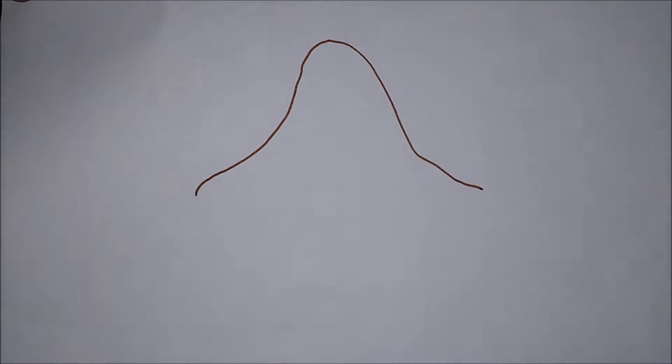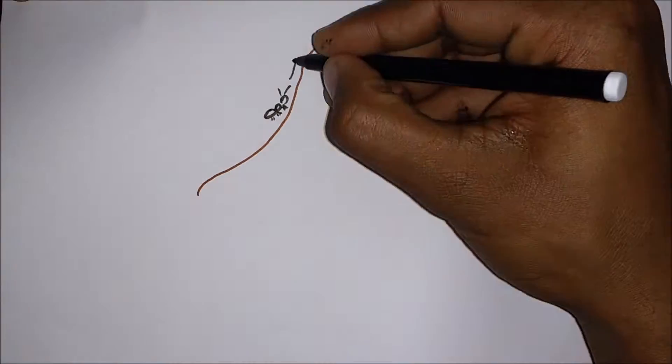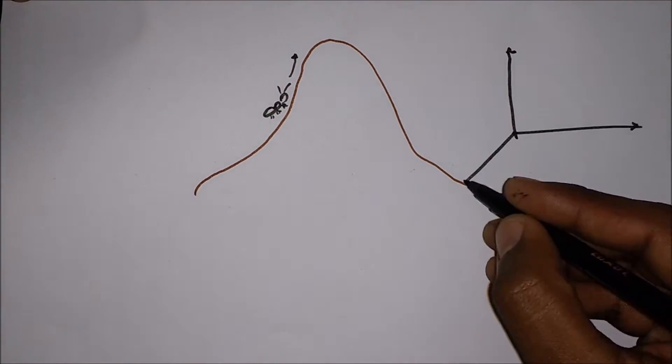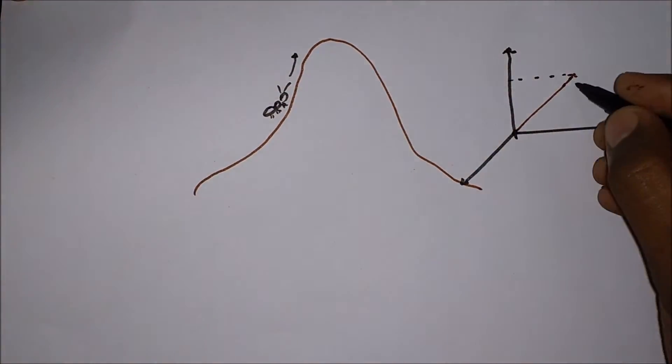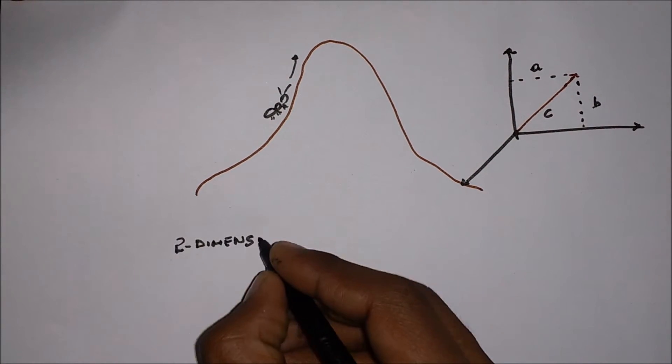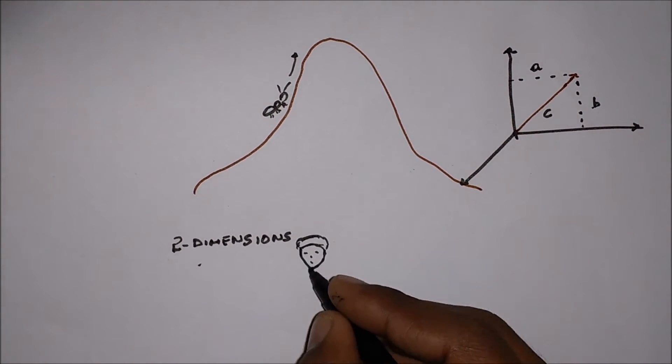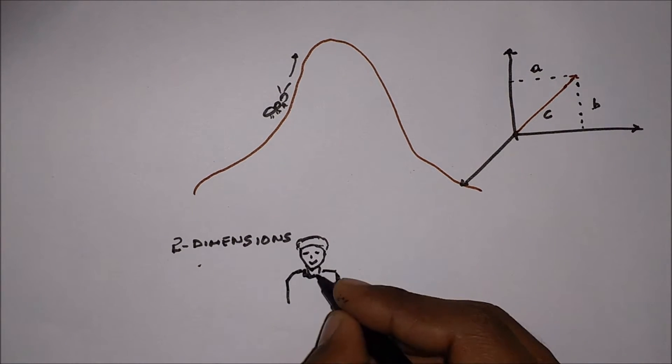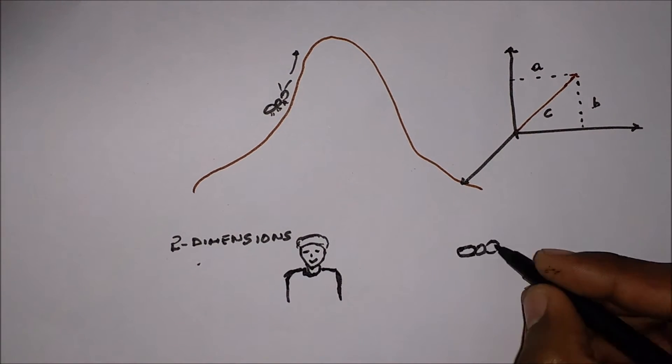Similarly, consider Antti who is climbing a hill following its natural curve. For us, it might appear that Antti is moving along a two-dimensional curve, moving forward and moving up. But Antti itself perceives its motion to be one-dimensional, i.e., along the curve of the hill.